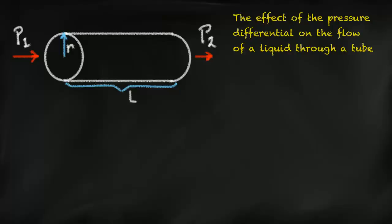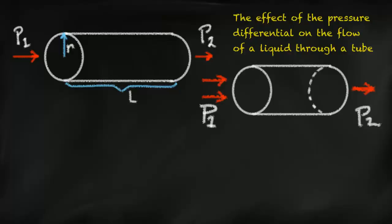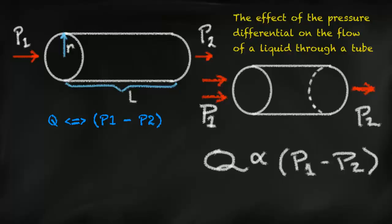What is the effect of increasing the pressure differential on the flow of a liquid through a tube? Now imagine that P1 is increased but all the other parameters are the same. Using your intuition, what do you think the effect will be on the flow? Is this relationship directly or indirectly proportional? Pause the video now and formulate your answer. As the pressure differential is increased, the flow will increase in a directly proportional manner.